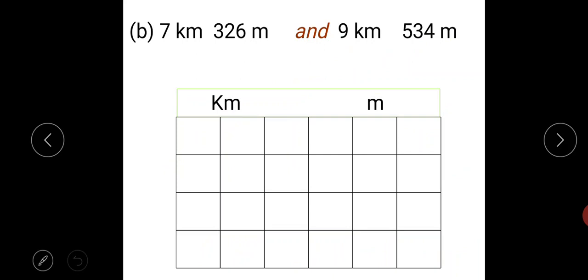Part B is we have to add 7 kilometre, 326 metre and 9 kilometre, 534 metre. So first of all we arrange these numbers in columns. 7 kilometre, 326 metre. Then 9 kilometre,